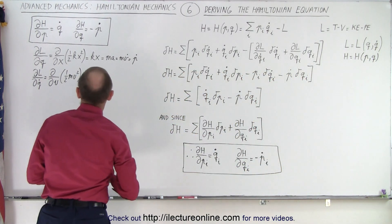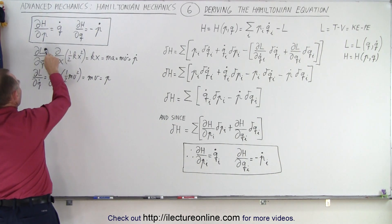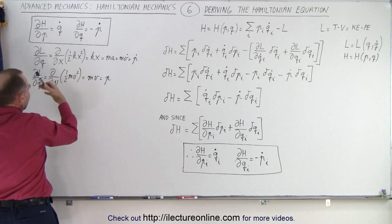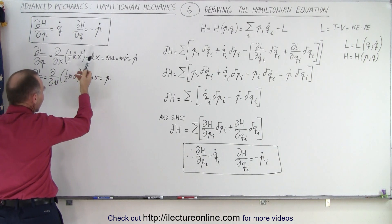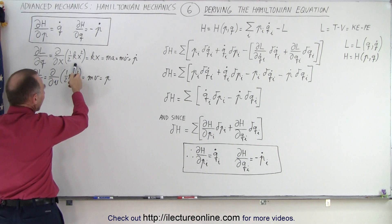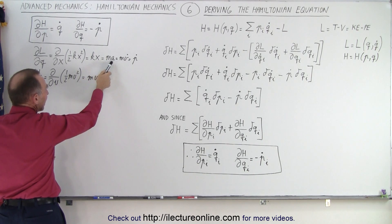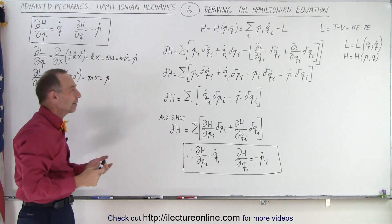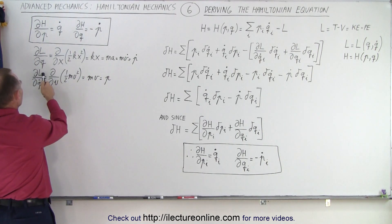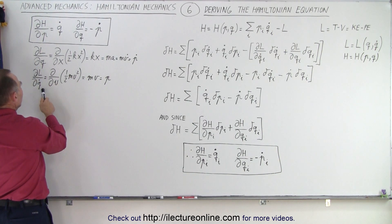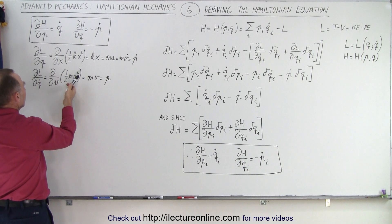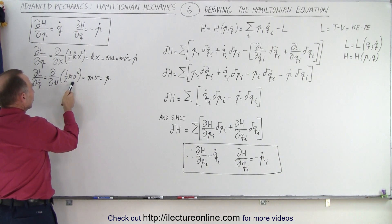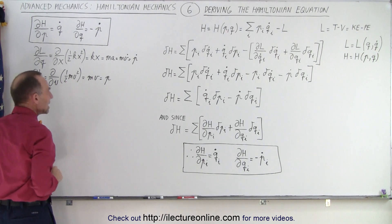We need to remember that the partial derivative of the Lagrangian with respect to q — in the dimension x, if we're dealing with a simple oscillator — the magnitude of that would be kx, which is ma, or mv-dot, which is equal to the momentum dot, p-dot. And the partial derivative of the Lagrangian with respect to q-dot, using the kinetic energy, we get the derivative with respect to velocity of one-half mv-squared, which is simply mv, or p.